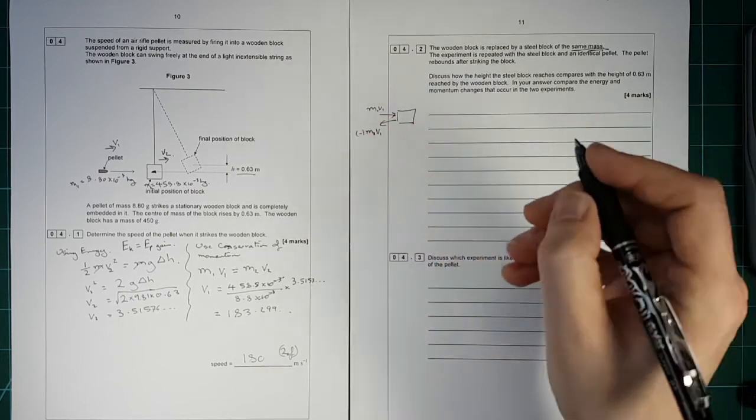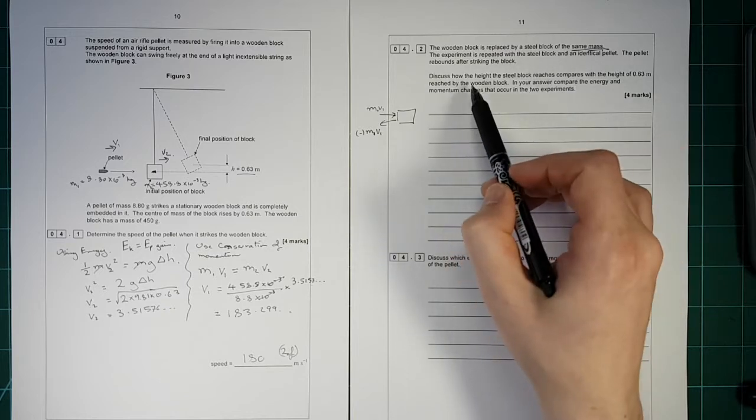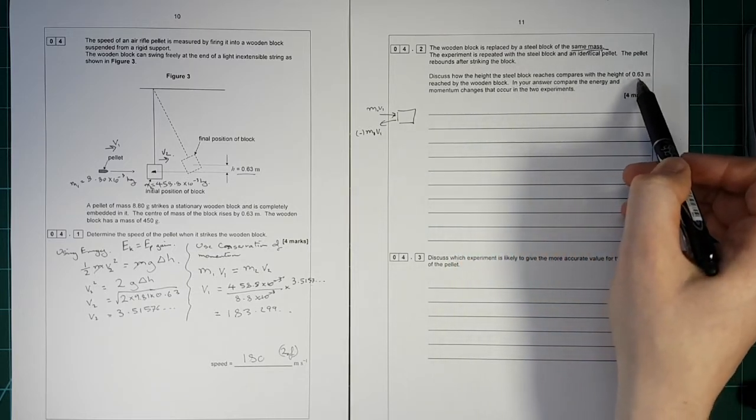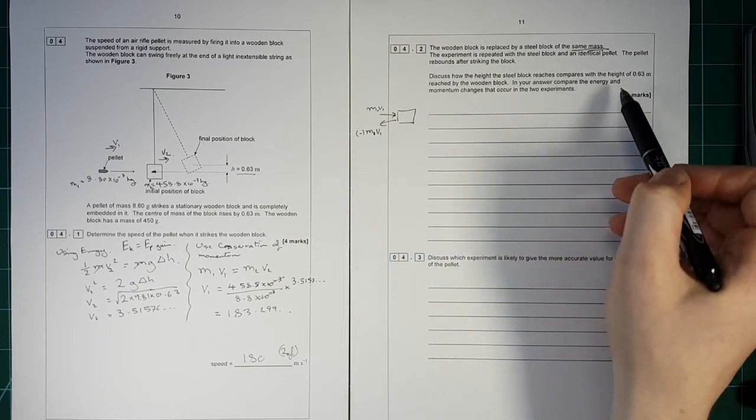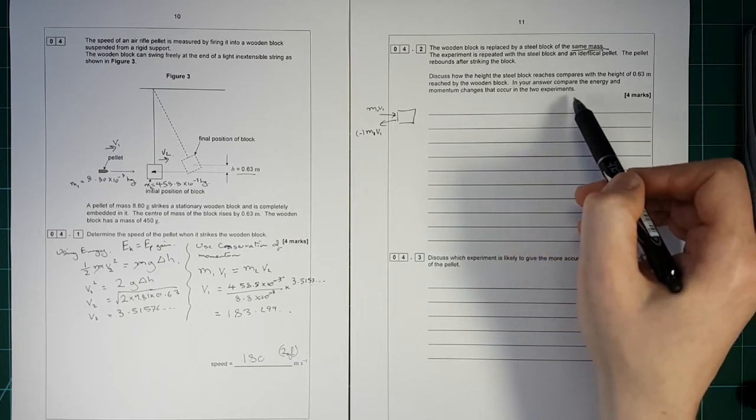Discuss how the height of the steel block reach compares with the height of 0.63 meters reached by the wooden block. In your answer, compare the energy and momentum changes that occur in the two experiments. Right.